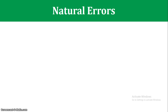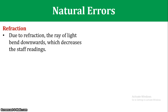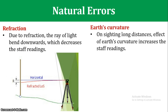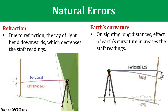Next are natural errors. The first is refraction — the line of sight passing through the atmosphere is bent, causing it to deviate from a straight line. The second is earth curvature. Over long distances, the level surface curves away from the horizontal line of sight, which is a tangential line. This difference increases with distance and introduces error into readings.